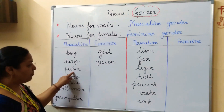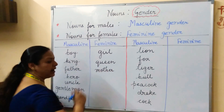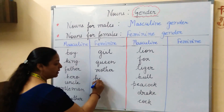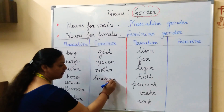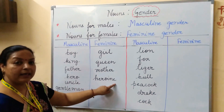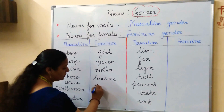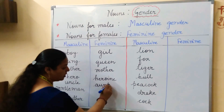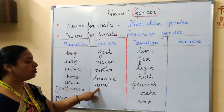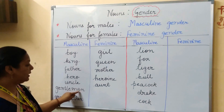For father, we will write mother — a commonly known gender pair. For hero, we will write heroine. See the spelling: H-E-R-O-I-N-E. For uncle, we will use aunt. Sometimes children say 'aunt' incorrectly — it is pronounced 'aunt.'